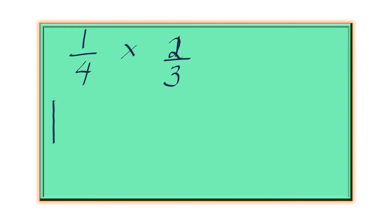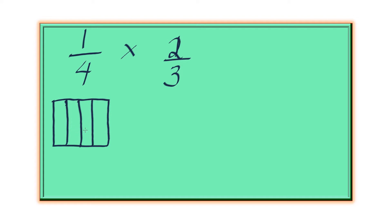What we'll do is draw a square. We're going to represent this 1 fourth by dividing this square into 4 sections. Let's do it vertically. So the denominator 4 represents the number of sections in the square. And then the top number 1 is going to be shaded. So if I ask you what fraction of this square is shaded, it's 1 shaded out of 4 sections.